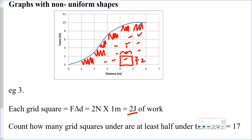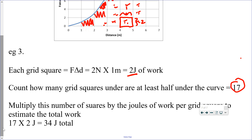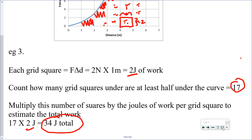Counting the grid squares that are at least half under the curve — after recounting to verify — we get 17 squares. Multiplying 17 squares by 2 joules per square gives an estimated area of 34 joules, which is the estimated amount of work done as shown by the odd-shaped force-distance graph.